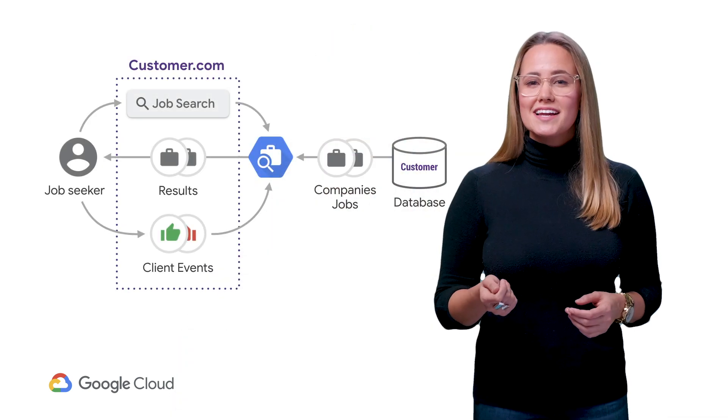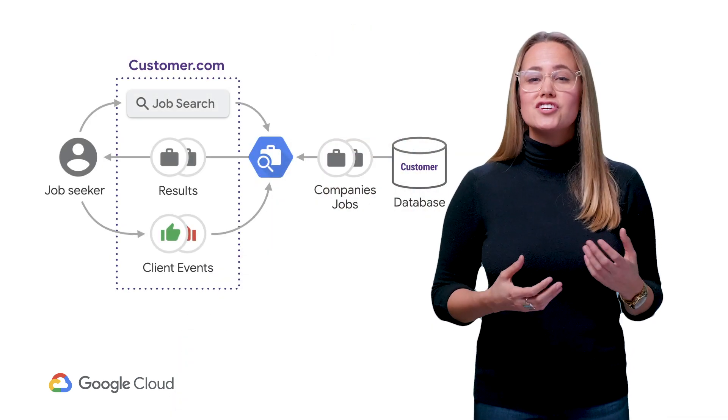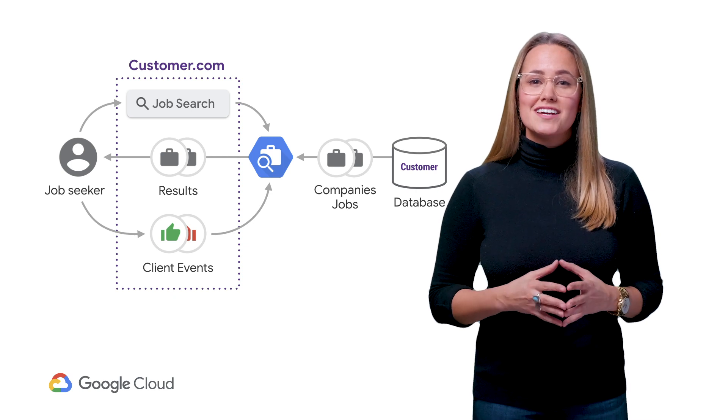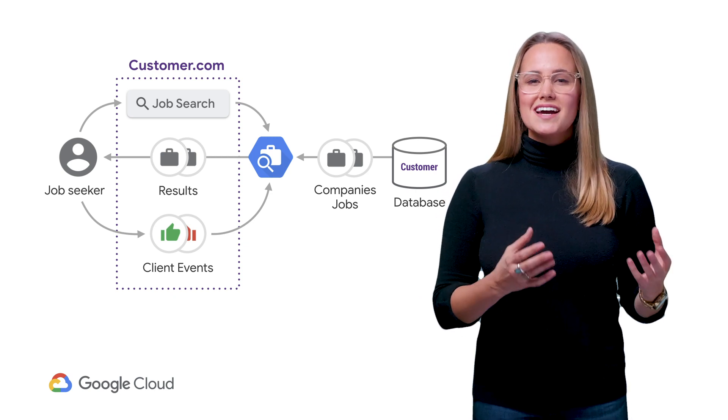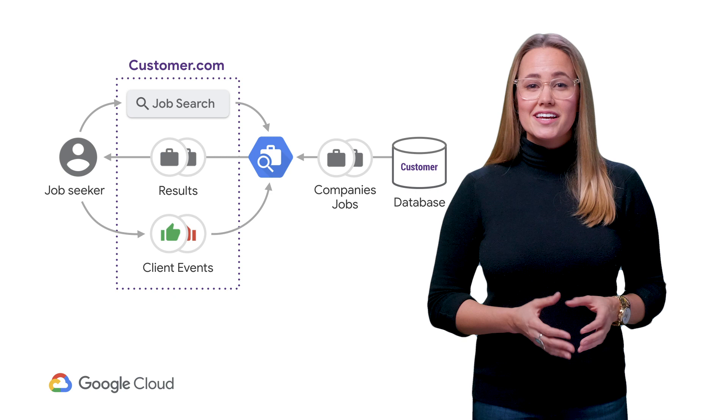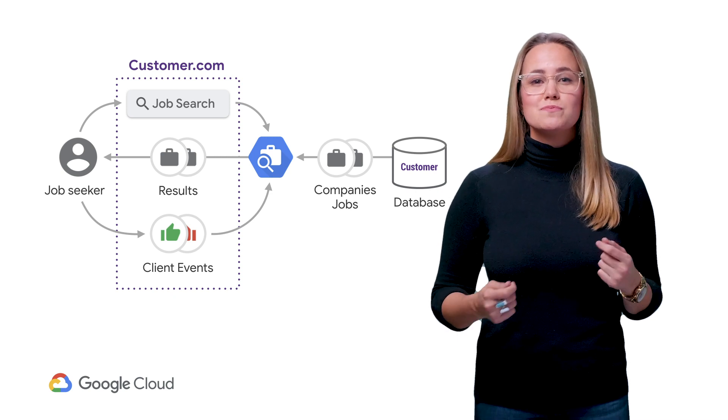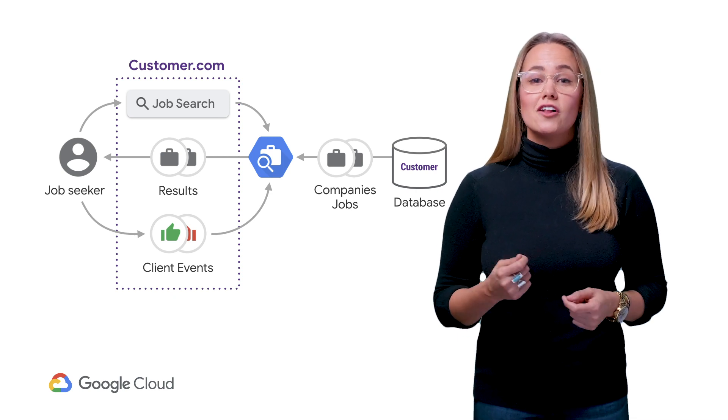With capacity planning set up, you're in good shape to start uploading data. Once your data is uploaded, the Job Search API will be ready to use thanks to the built-in ML models. When designing your integration, it's important to ensure that your solution is built in a fault-tolerant manner. That way, if the Job Search API index needs to be tweaked for any reason, you can route traffic back to your existing backend without interrupting your user's job search experience.